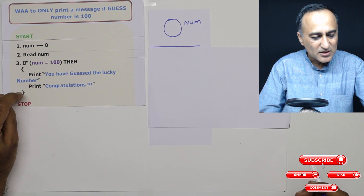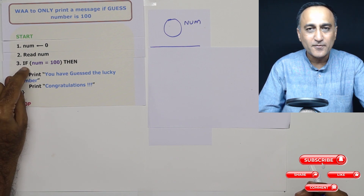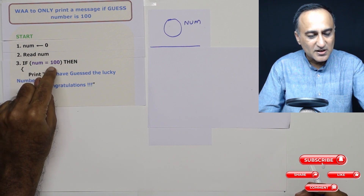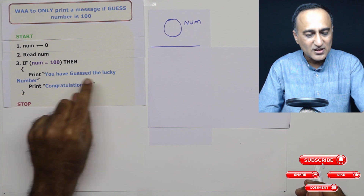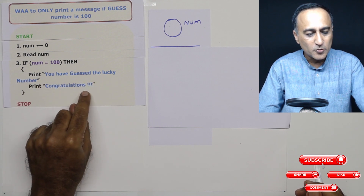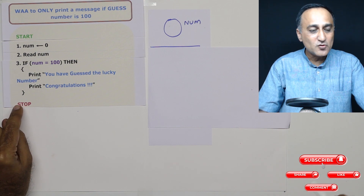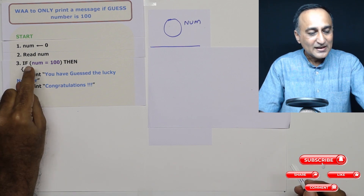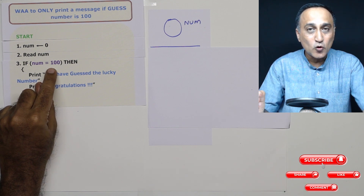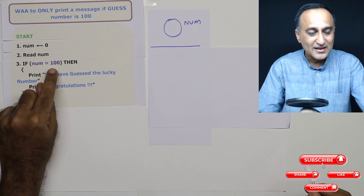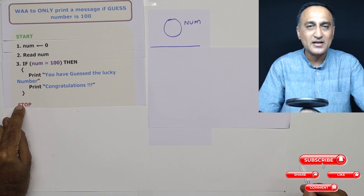Whatever is within this flower bracket is connected to this 'if'. So if the condition happens to be true, it is going to print the message 'You have guessed the lucky number' and print 'Congratulations', then come to a stop. But if the user entered 25, then 25 equals 100 is false — the condition is false — so nothing will happen and it will directly come to a stop.